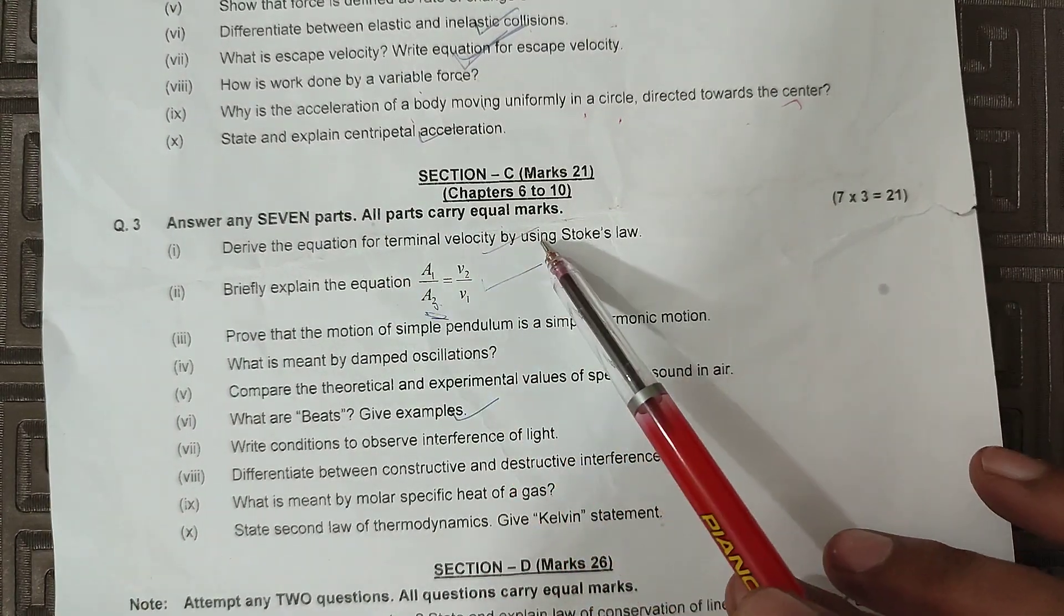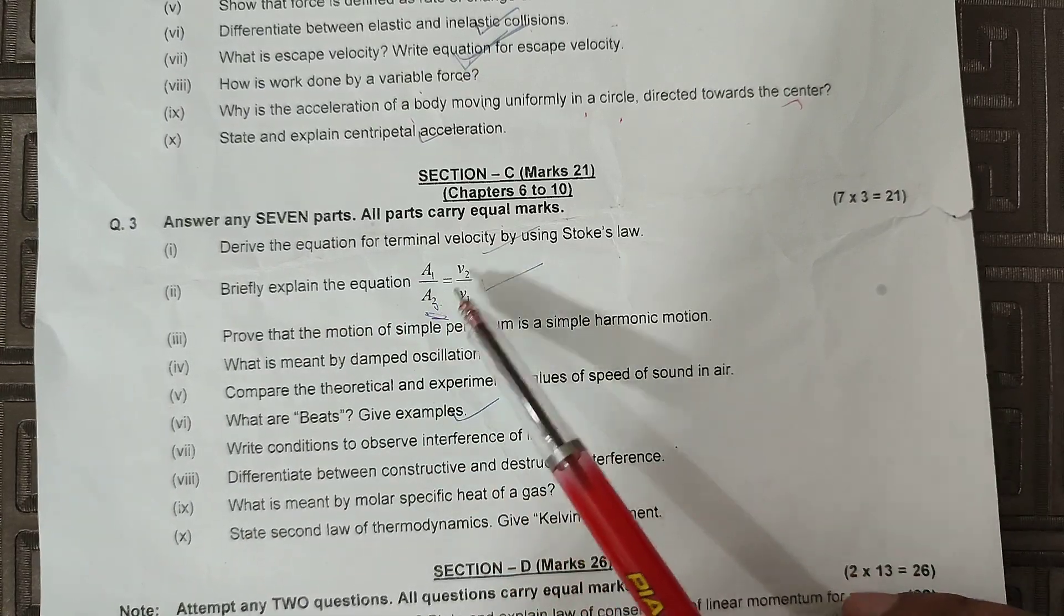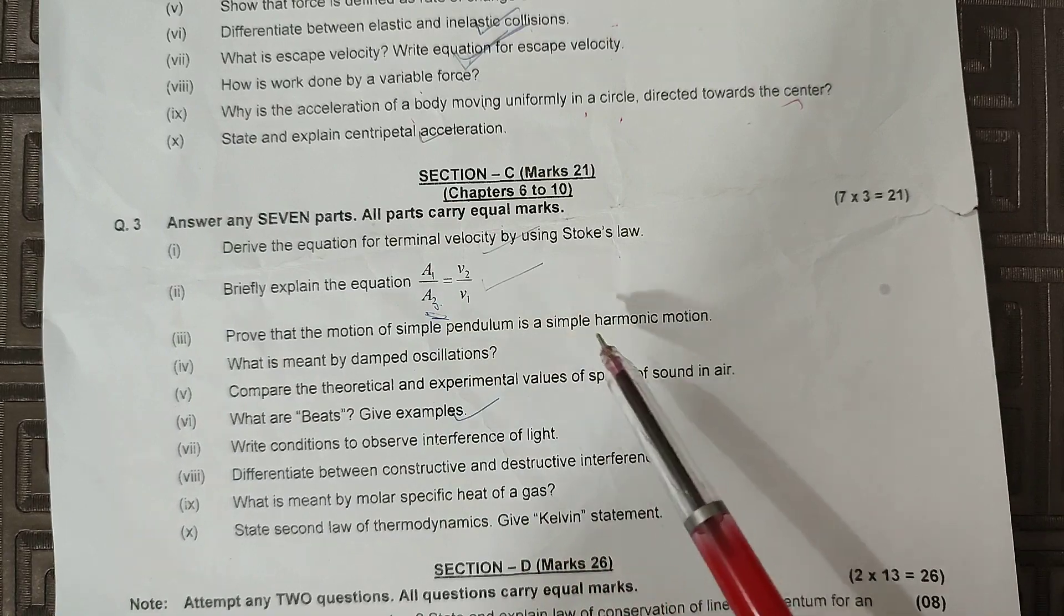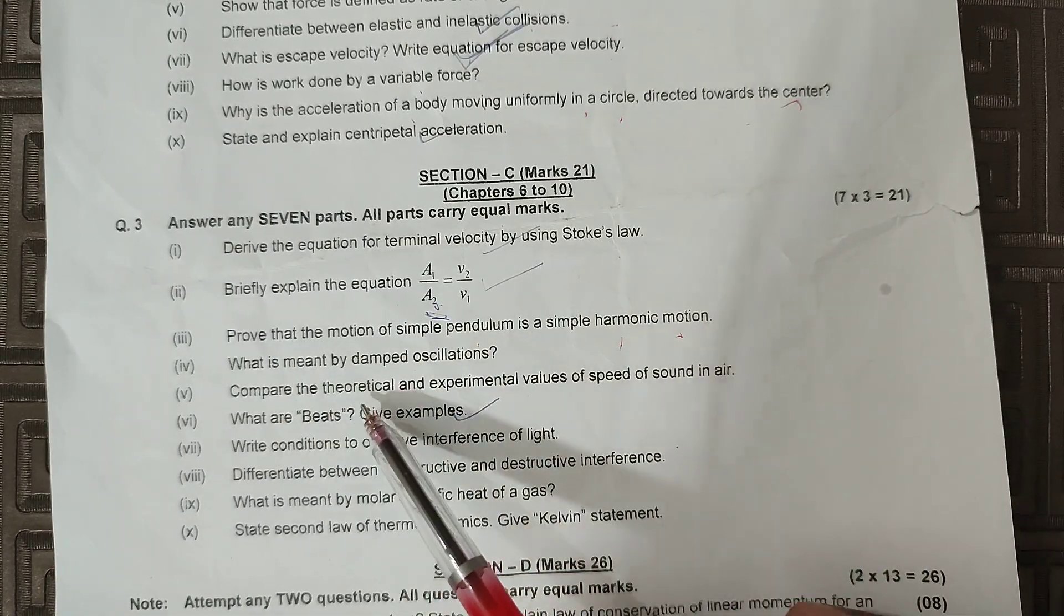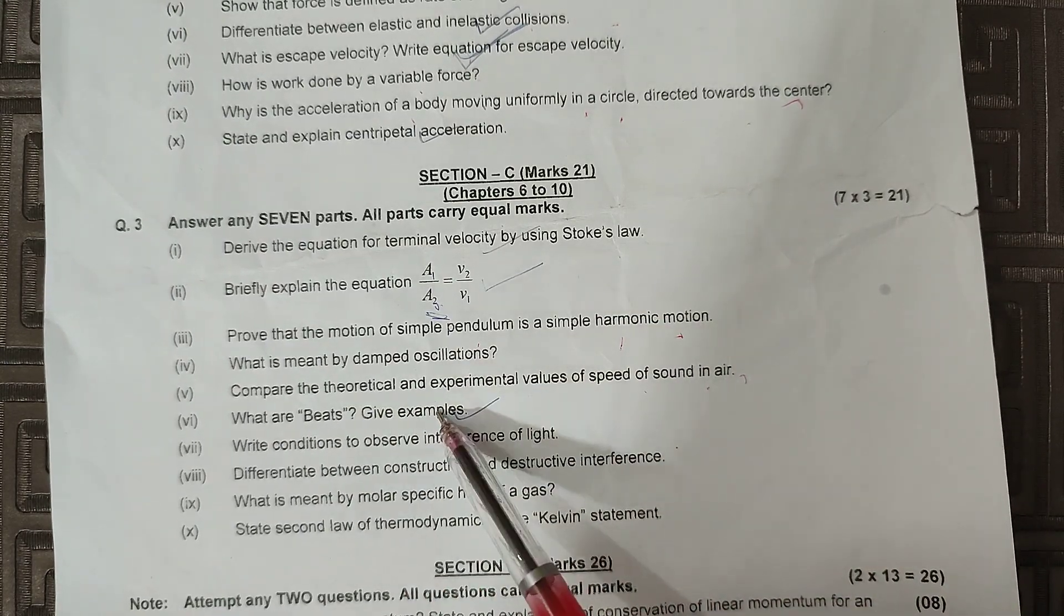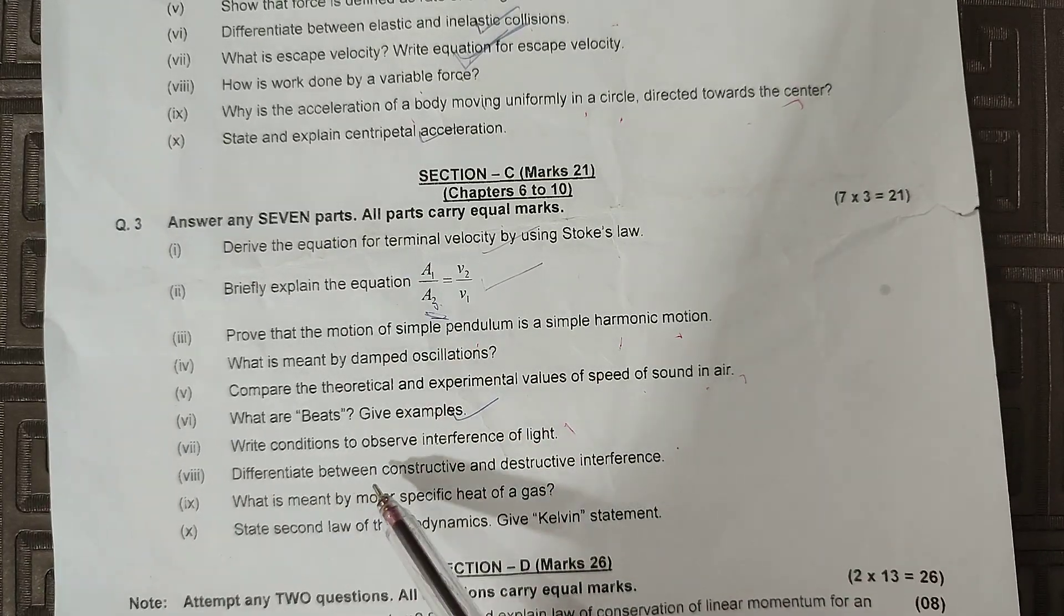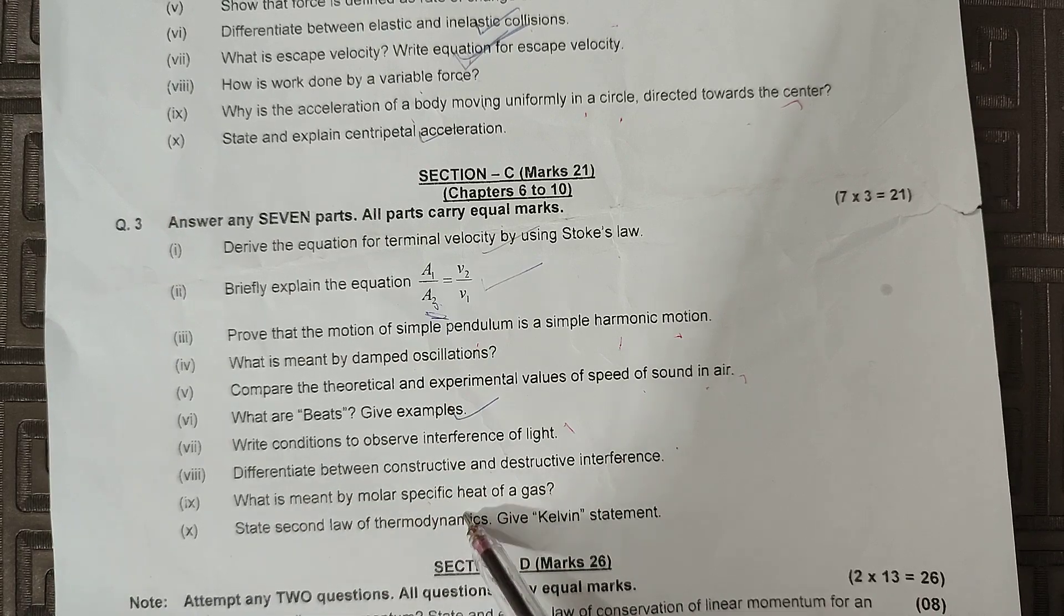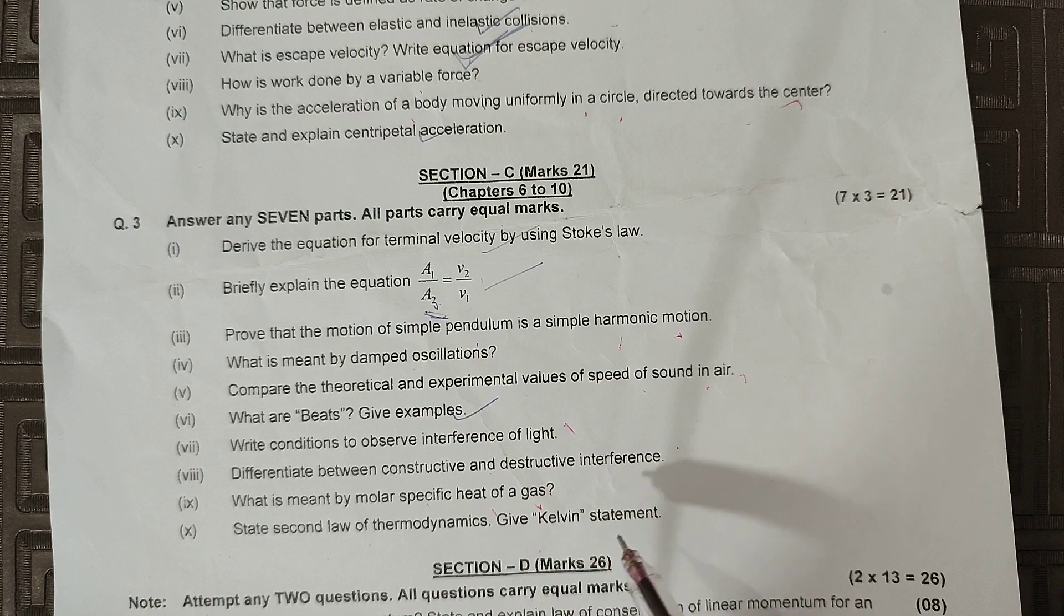Next: Derive the equation for terminal velocity by using Stokes law. Briefly explain the equation A1V1 = A2V2. Prove that the motion of simple pendulum is a simple harmonic motion. What is meant by damped oscillations? Compare the theoretical and experimental values of speed of sound in air. What are beats? Give examples. Write conditions to observe interference of light. Differentiate between constructive and destructive interference. What is meant by molar specific heat of a gas? State second law of thermodynamics, give Kelvin statement.